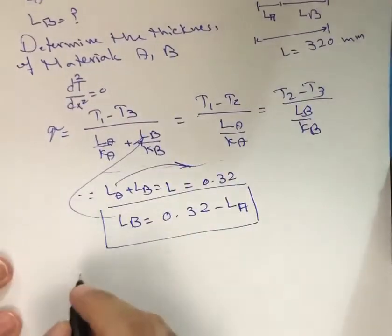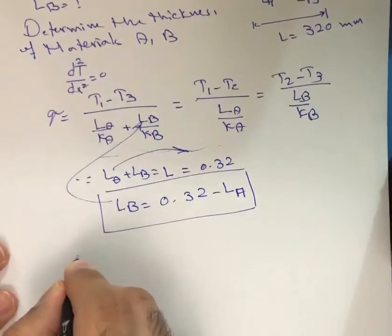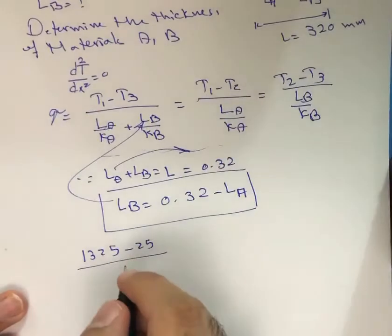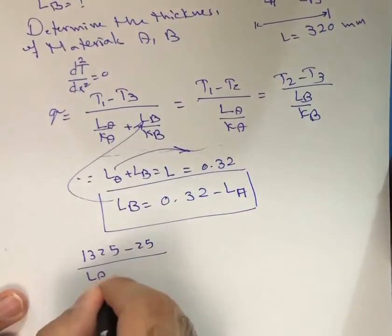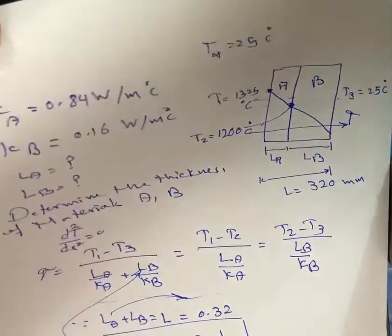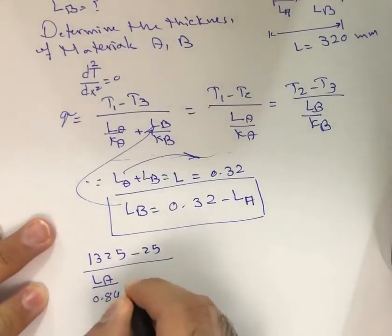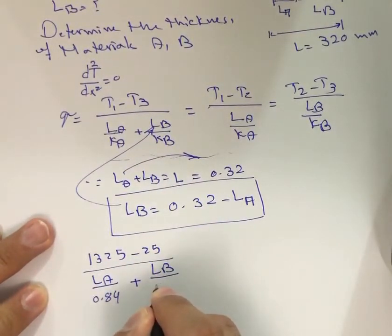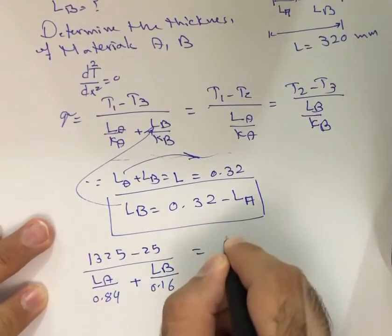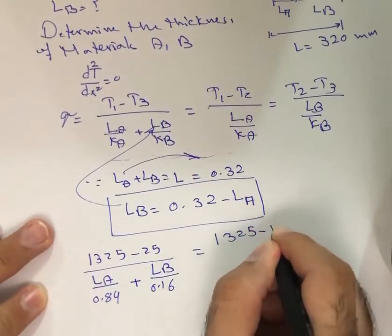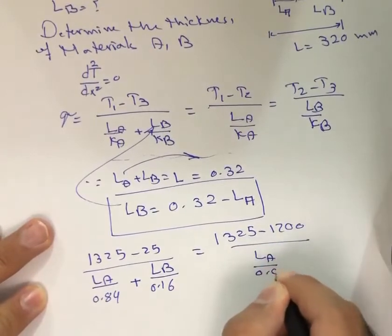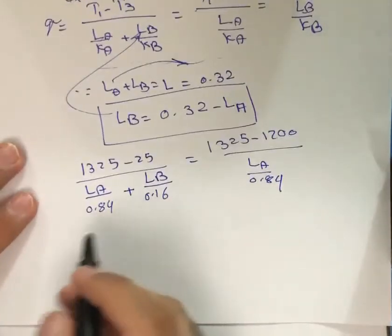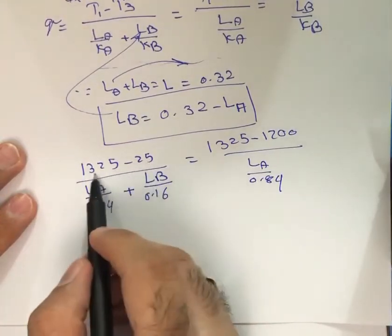Choosing the first two terms: (T1 minus T3) can be written as (1325 minus 25) divided by (L_A divided by 0.84 plus L_B divided by 0.16). This equals (T1 minus T2), which is (1325 minus 1200) divided by (L_A divided by 0.84). Substituting L_B equals (0.32 minus L_A) into the equation.